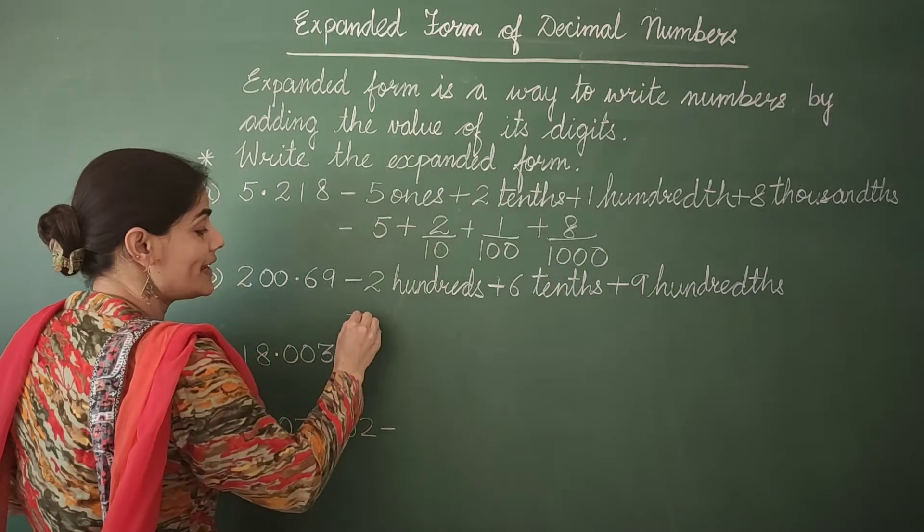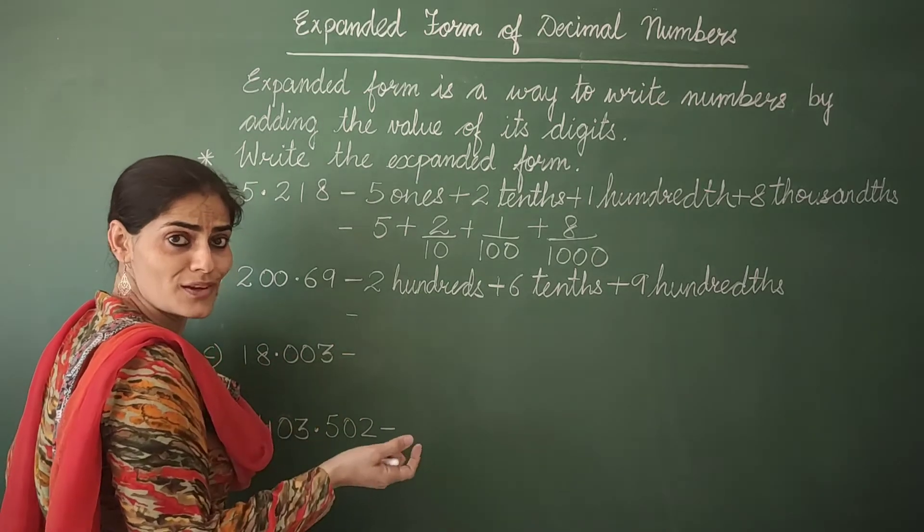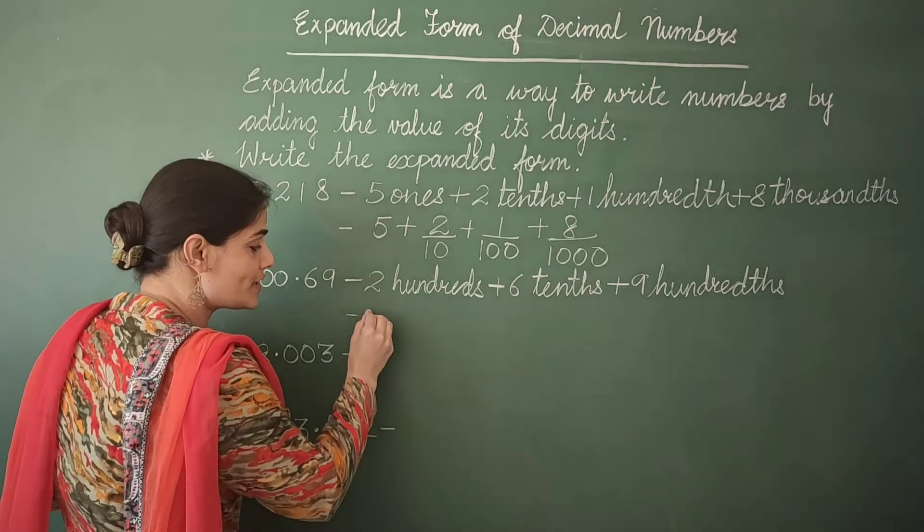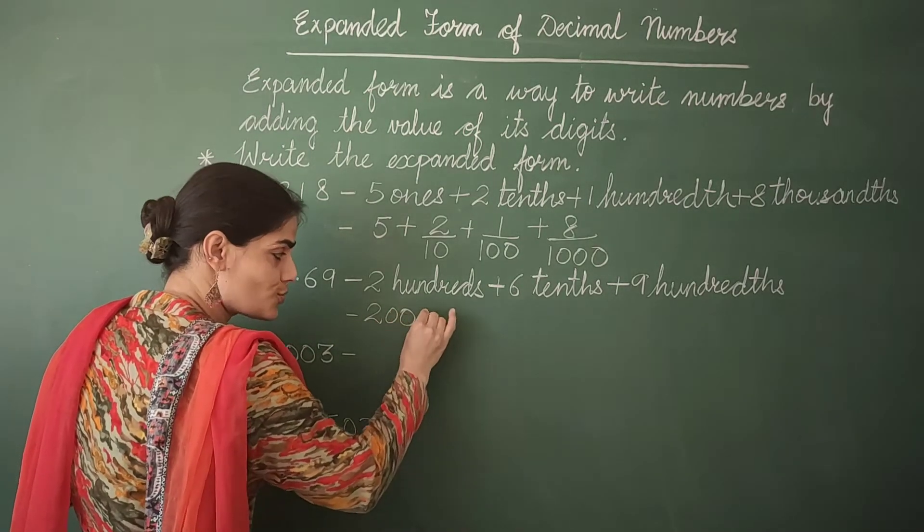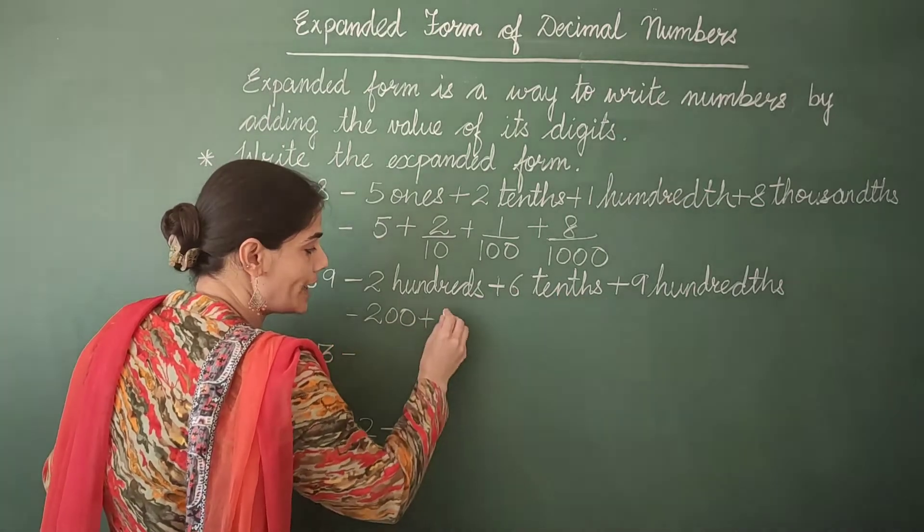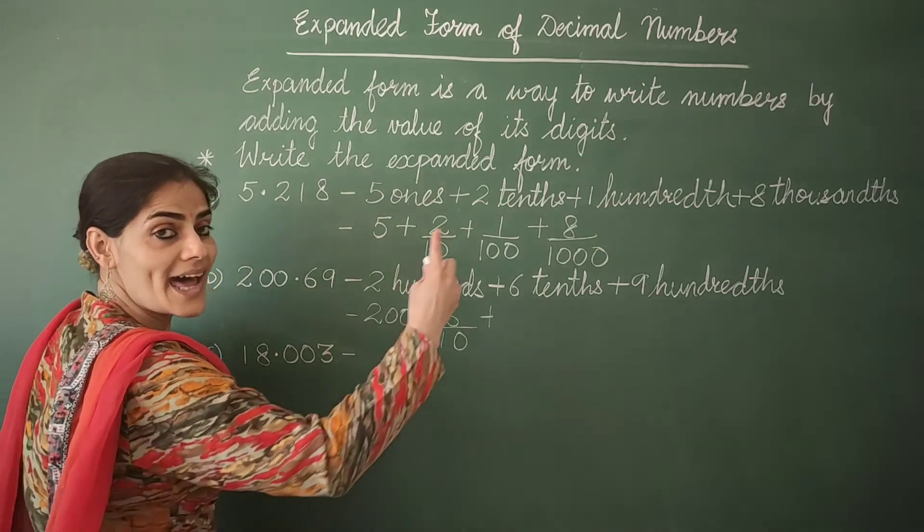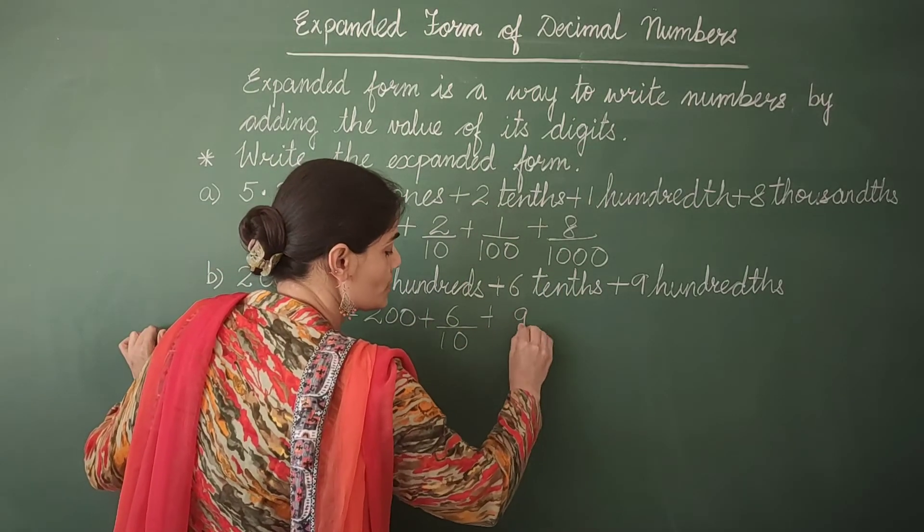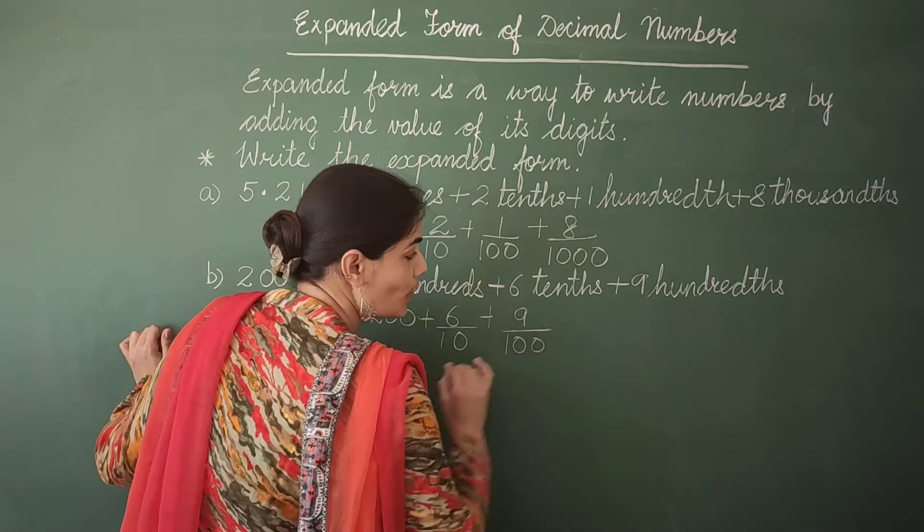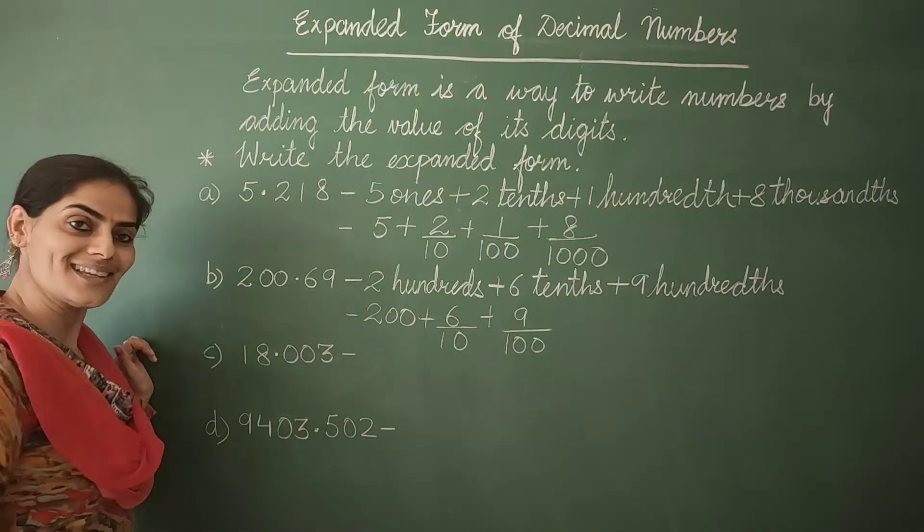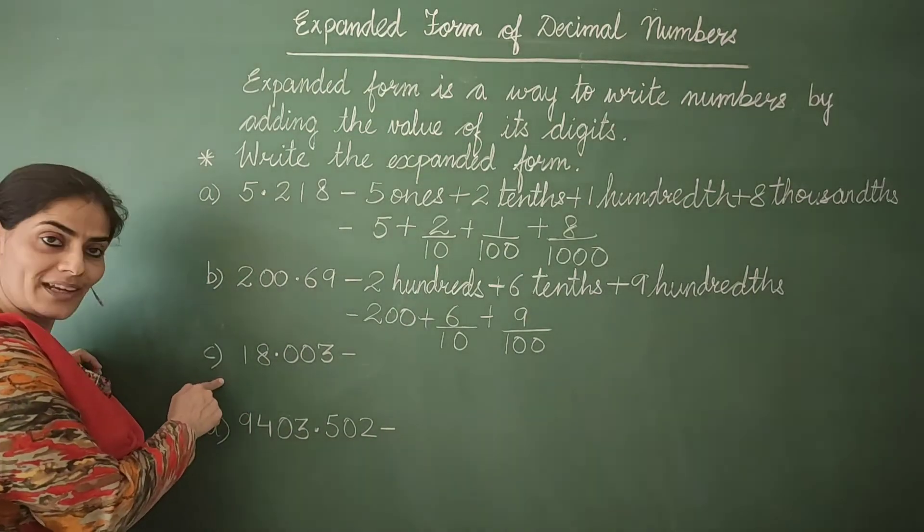Now let's write it in simpler form. So 2 hundreds is equal to 200. 6 tenths is equal to 6 upon 10. 9 hundredths is equal to 9 upon 100. That's it. Now look at part C.